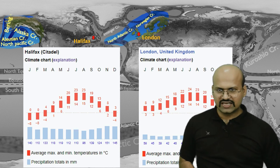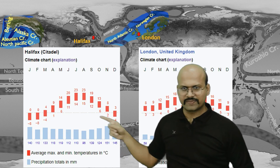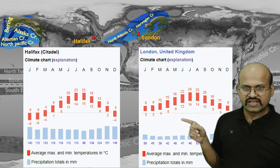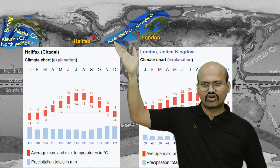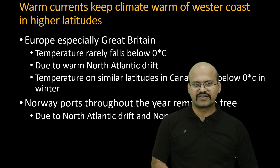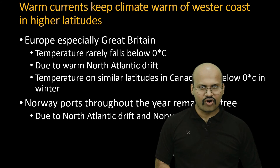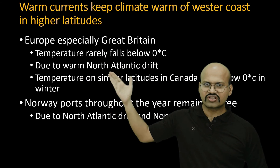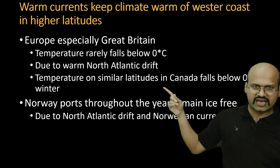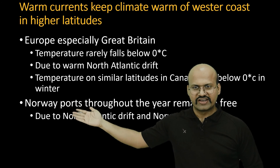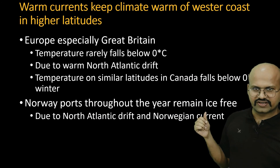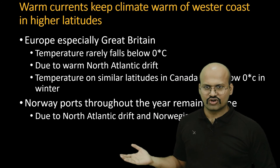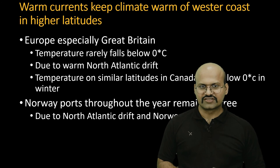Comparing their temperature profiles, Halifax has at least three months of sub-zero temperatures, while London, even though on the same latitude, does not cross zero degrees Celsius. This is mainly because of the warm water brought by the North Atlantic Drift. Europe, and especially Great Britain, never crosses below zero degrees Celsius because of the warm waters of the North Atlantic Drift. Norway, located near the Arctic Circle, even has ice-free ports, because the North Atlantic Drift brings warm water from the equatorial regions to these higher latitudes.